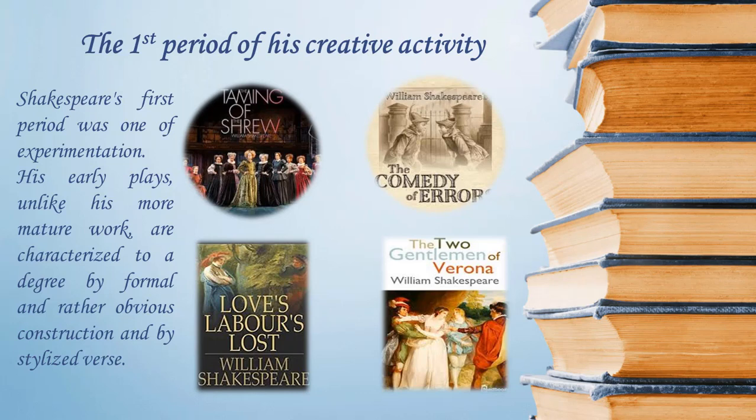The four-play cycle closes with the death of Richard III and the accession to the throne of Henry VII, the founder of the Tudor dynasty, to which Elizabeth belonged. In style and structure these plays relate partly to medieval drama and partly to the works of early Elizabethan dramatists, especially Christopher Marlowe. The influence of the classical Roman dramatist Seneca is also reflected, especially in the bloodiness of many scenes. The influence of Seneca — exerted by way of the earlier English dramatist Thomas Kyd — is particularly obvious in Titus Andronicus, a tragedy of righteous revenge for heinous and bloody acts.